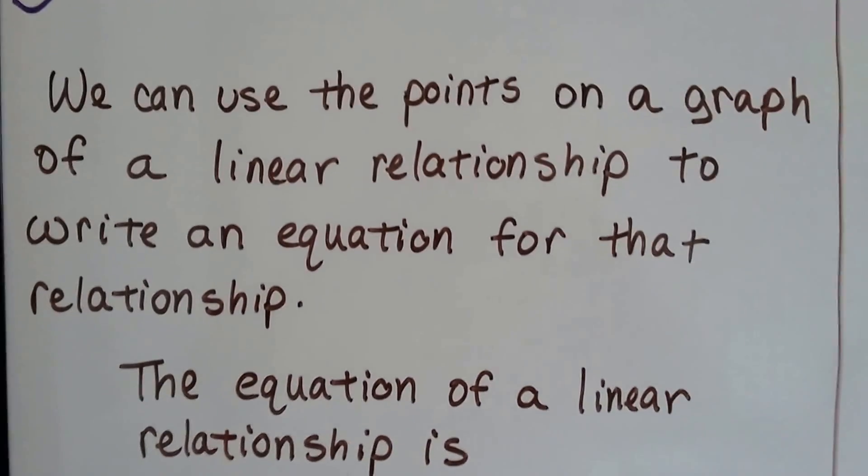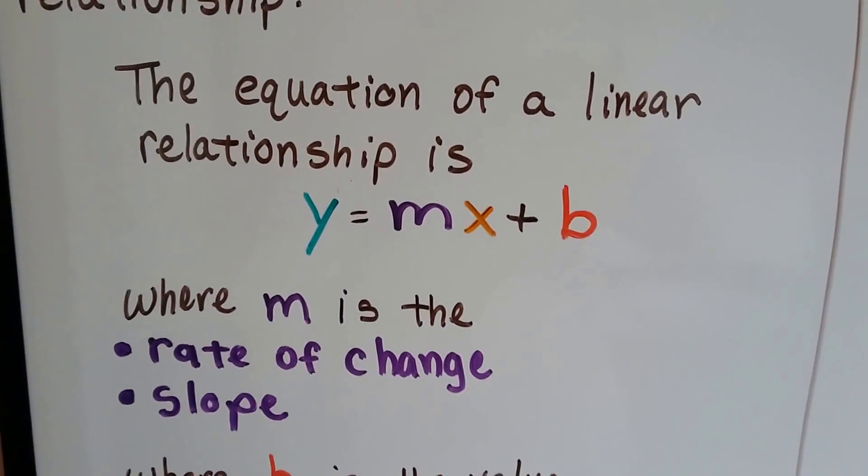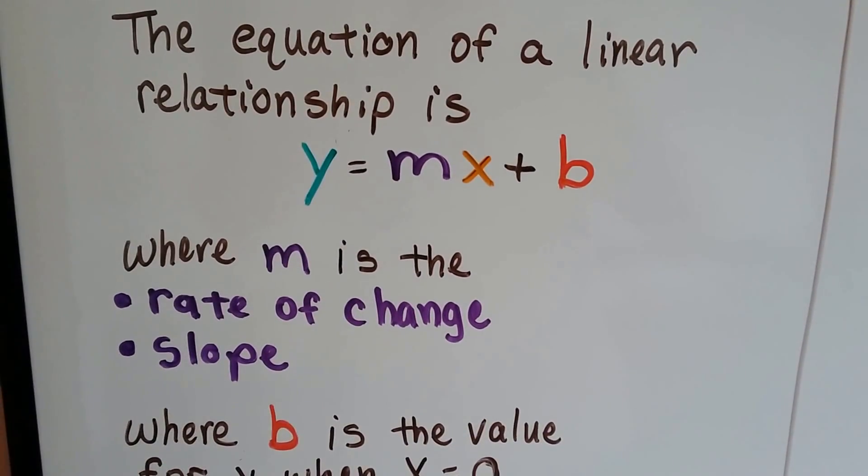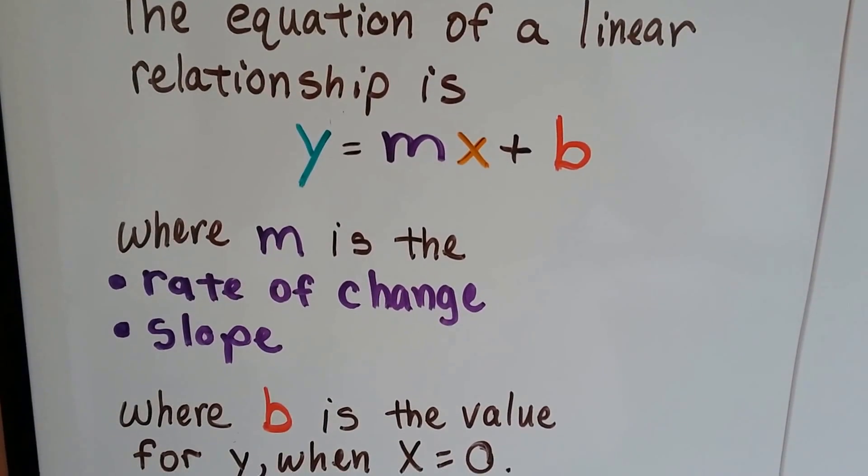We can use the points on a graph of a linear relationship to write an equation for that relationship. The equation of a linear relationship is y equals mx plus b, the slope-intercept form of an equation for a line.